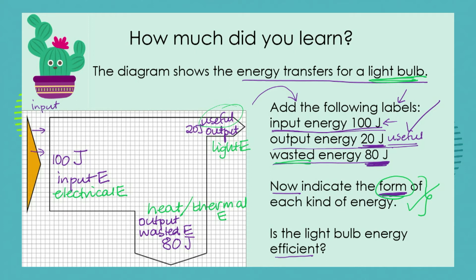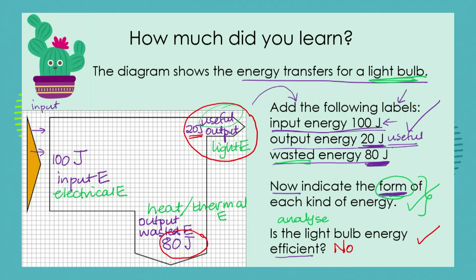Now finally we can analyze our drawing and say: is the light bulb energy efficient? In terms of efficiency, the light bulb is only producing 20 joules of useful energy but it's wasting 80 joules. So is it energy efficient? We would have to say no, it is not energy efficient. This is an example of a test question with many different aspects, but it's quite simple if you take your time and answer in order.